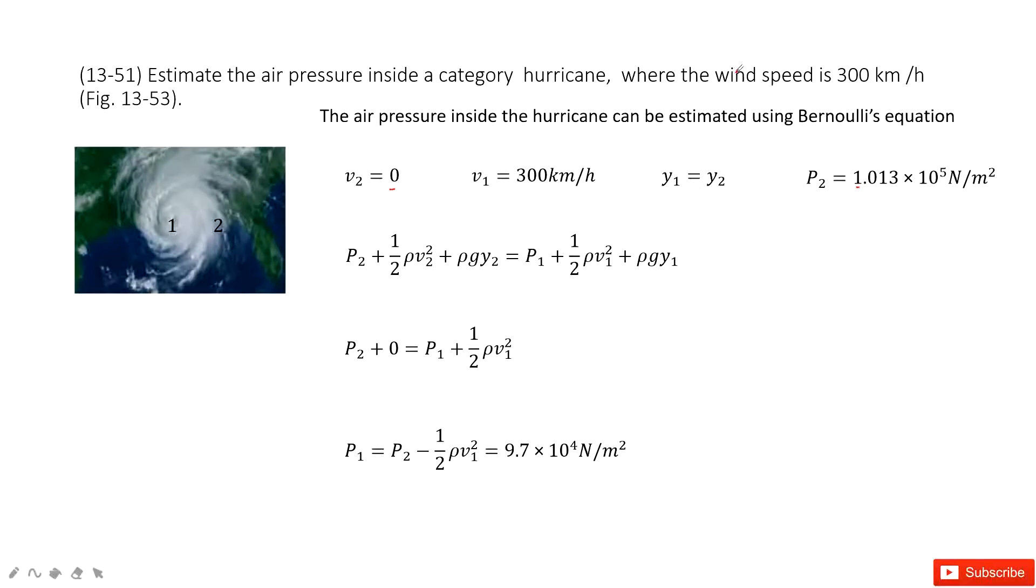This one you can check in our textbook. And V1 will tell you the wind speed is 300 km per hour. So this is V1. Now we look at Bernoulli's equation.